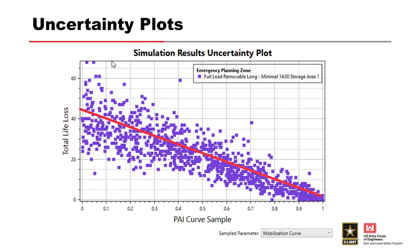For mobilization, there is a moderate negative correlation between life loss and PAI — the more people who take protective action, the less life loss is experienced. Questions to consider include: what measures could we implement to promote higher rates of mobilization, and is our messaging good? At an SQRA debating whether providing community education to improve evacuation readiness is worthwhile — if you get a higher percentage of the population to mobilize quickly, you can potentially reduce life loss in a meaningful way.